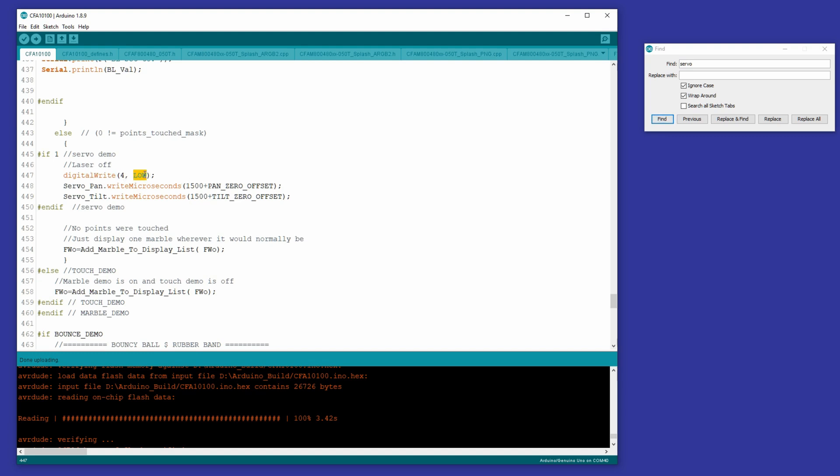That is hooked up to the gate of an n-type FET and it simply pulls the ground of the laser to float when that's low. And when it's high, it pulls the ground to ground and turns the laser on.